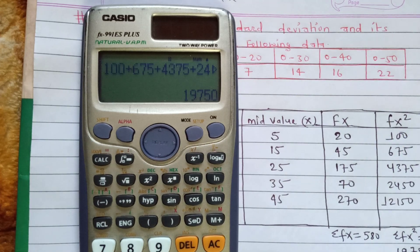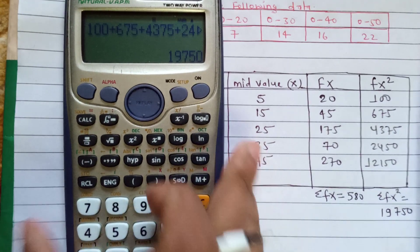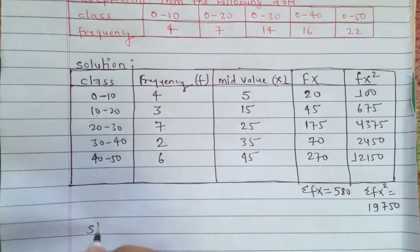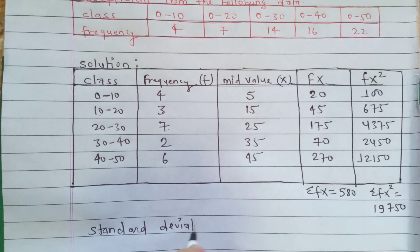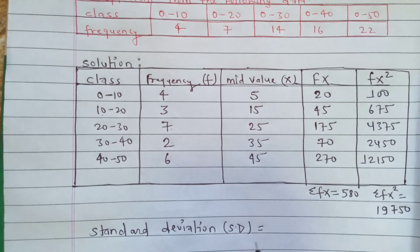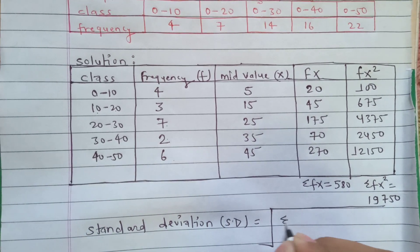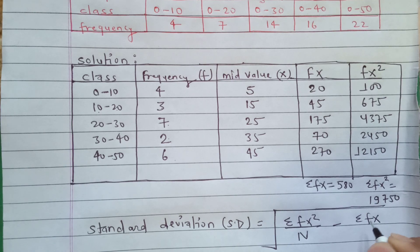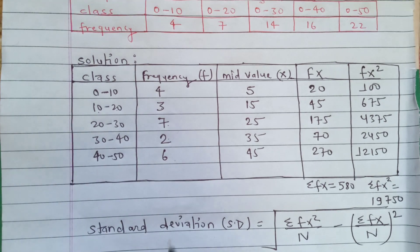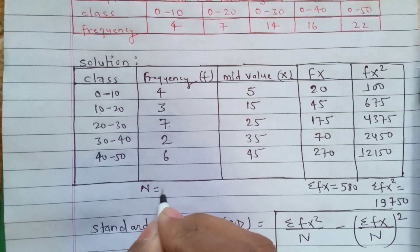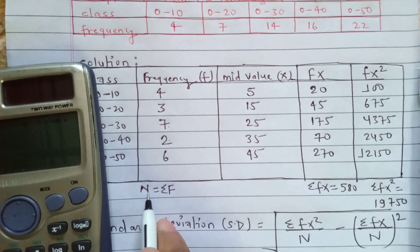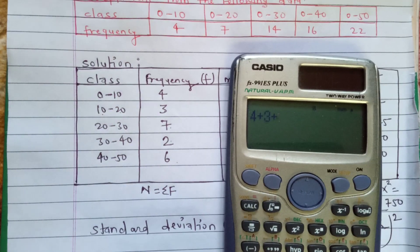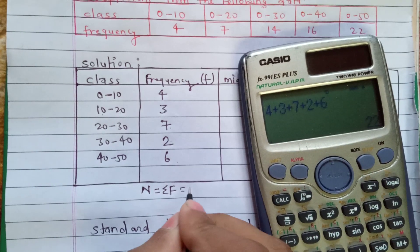Now I am going to use the formula of standard deviation: σ = √(ΣFX²/N − (ΣFX/N)²). We calculate N, which is sigma F: 4 + 3 + 7 + 2 + 6 = 22. So N equals 22.